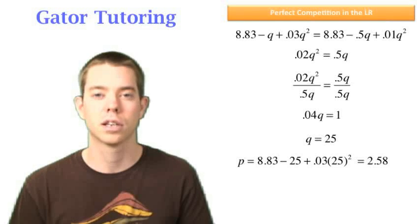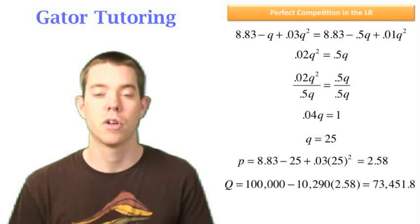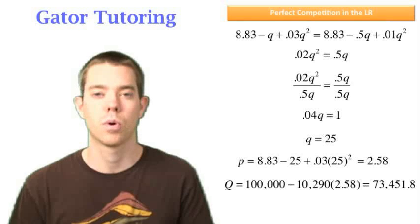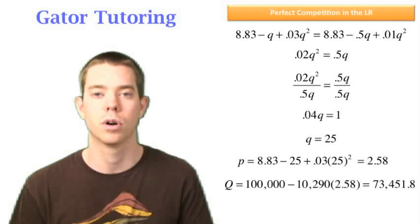Now we need to look at our demand curves. Our first demand curve was this, and we know that it's shifted. First, let's find what quantity demanded was equal to before the demand curve changed. We see that before the demand curve changed, we sold 73,451.8 units.